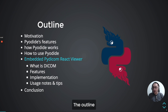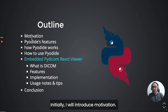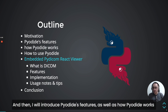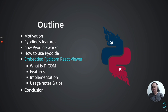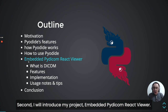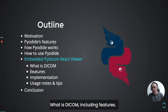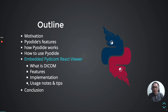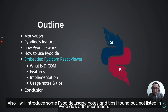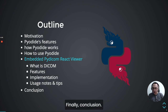The outline: Initially, I will introduce motivation, and then I will introduce PyDai features, as well as how PyDai works and how to use PyDai. Second, I will introduce my project — Embedded PyDicom UI Viewer — including features and implementation details. I will also introduce some PyDai usage notes and tips not listed in the PyDai documentation. Finally, conclusion.